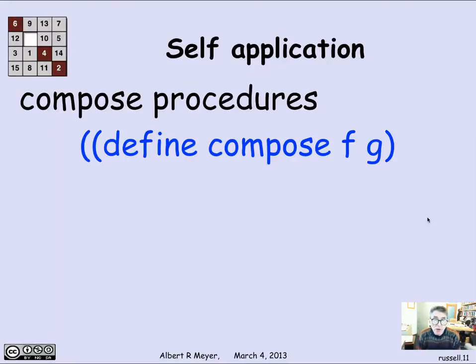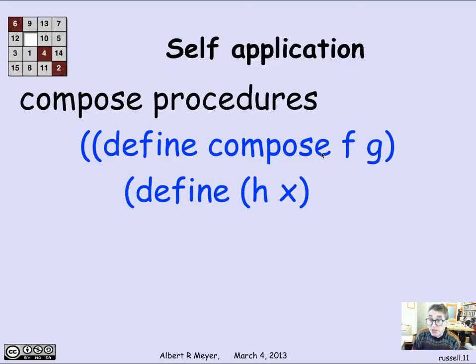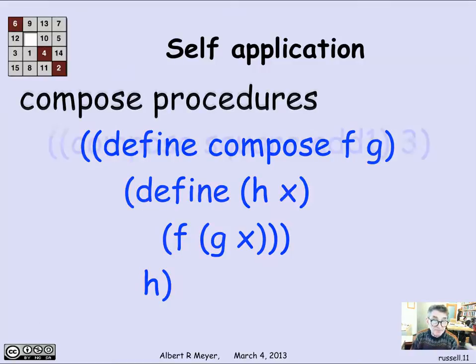Let's look at another example where, in computer science, we actually apply things to themselves. So let's define the composition operator. And again, I'm using notation from the language scheme. I want to take two functions, f and g, that take one argument. And I'm going to define their composition. The way that I compose f and g is I define a new function h of x, which is going to be the composition of f and g. The way I define h of x is I say, apply f to g applied to x and return the value h. So compose is a procedure that takes two procedures, f and g, and returns their composition, h.